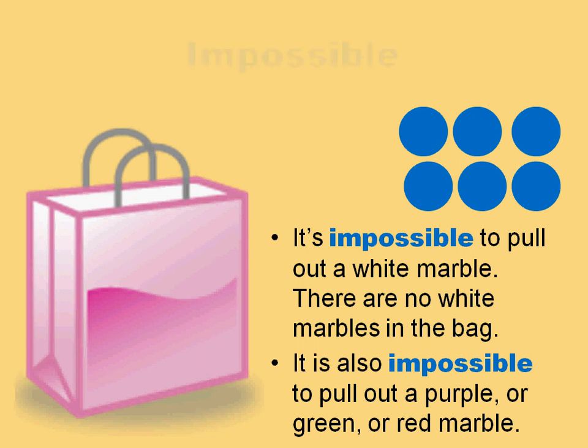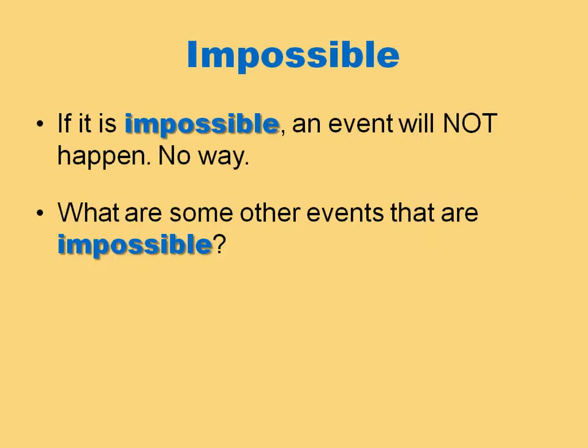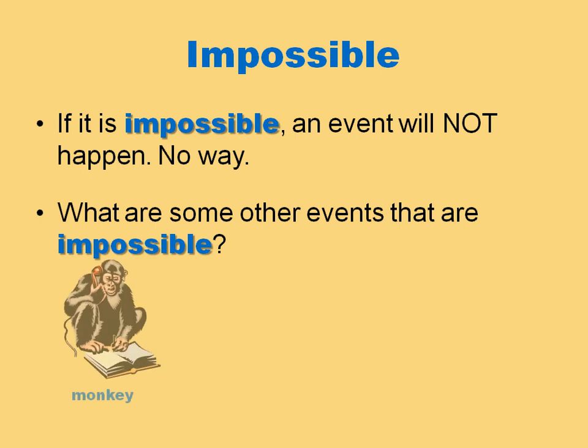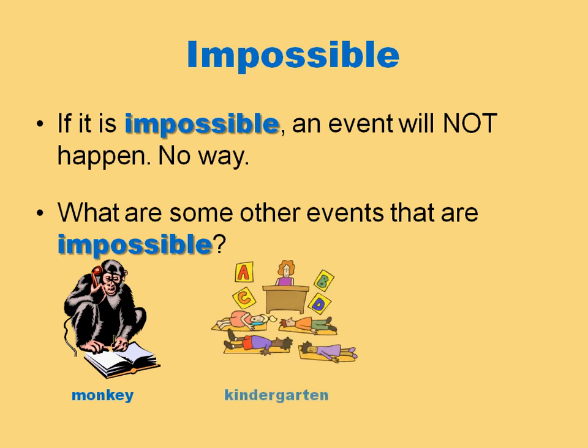If something is impossible, it will not happen — no way. What are some other events that are impossible? It is impossible that a monkey will call you on the telephone — there is just no way. It is impossible that you will go back to kindergarten when you finish third grade. It is impossible that you will have a whale as a pet; they are too big.